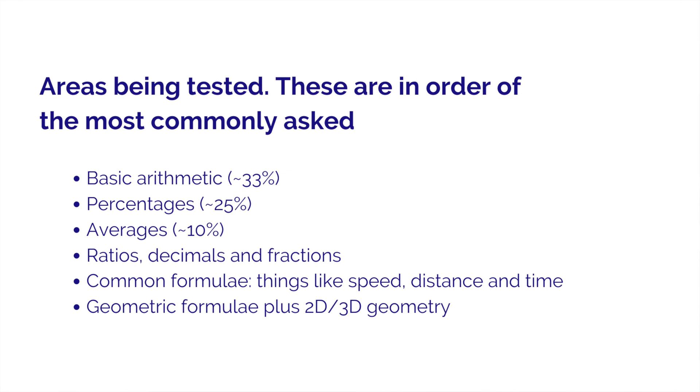The question stems can be quite short, but sometimes they can be very long, so you can spend a lot of time just reading before answering. In terms of the areas tested in Quantitative Reasoning, I've listed these in order of frequency. The most common, seen in about a third of questions, is basic arithmetic. About a quarter is percentages, about 10% is averages, and the rest is distributed between ratios, decimals and fractions, common formulae, and geometry. On top of all these skills, the most important is data interpretation — using mathematical skills to extract information and assess it correctly.